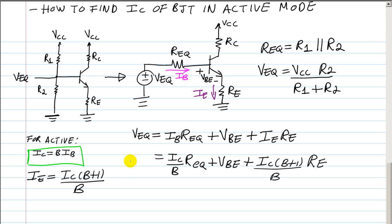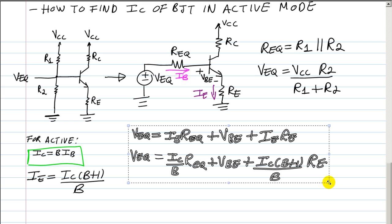So now that we have this equation in terms of IC, we can just solve for IC, and that is going to give you a formula that you can use whenever you have a BJT in active mode.